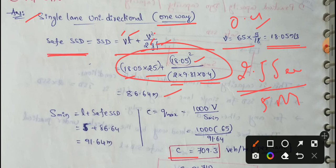The value is 86.64 m. This is safe SSD. Two vehicles have two vehicles. The distance is safe SSD. That is 86.64 m. We have SSD value.